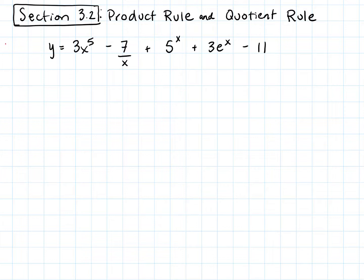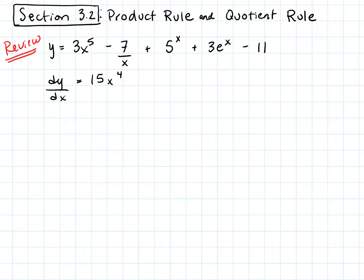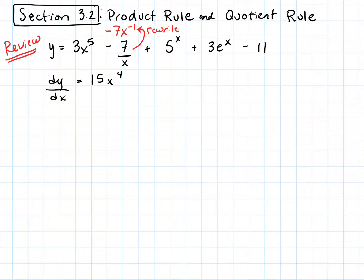So just as a quick little review, let's take this derivative because we're going to use these skills today. dy/dx would give me 15x to the fourth. This minus 7 over x — I should rewrite this as minus 7x to the negative first. So doing a rewrite, we get 15x to the fourth, and we will have a positive 7x to the negative 2.